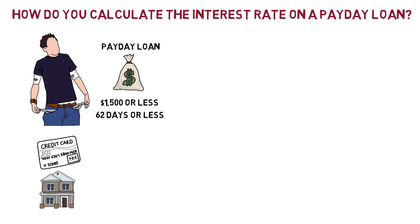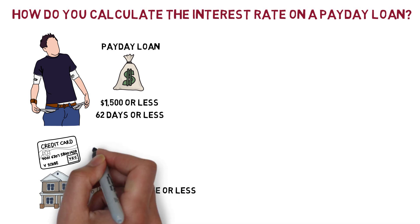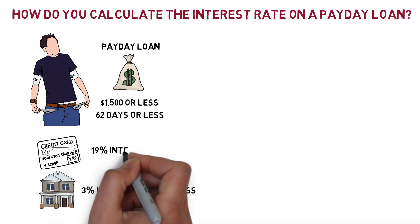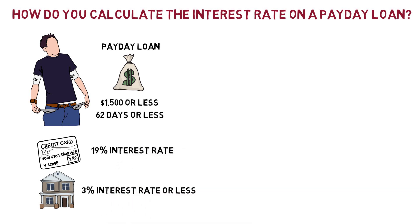For example, if you were borrowing money to buy your first house at the beginning of 2015, you probably know you could get an interest rate of less than 3%. You might clearly know that your credit card provider charges a fixed annual interest rate of say 19%.